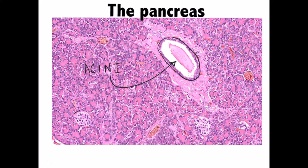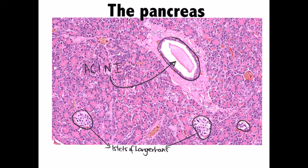The other distinct cellular population in the pancreas is the islets of Langerhans - clusters of cells serving the endocrine function. Because of this endocrine function, blood vessels are closely associated with these cells. The islets make and secrete two critical hormones, insulin and glucagon, which regulate blood glucose levels. In an H&E stain you cannot distinguish alpha and beta cells, but alpha cells secrete glucagon and beta cells secrete insulin.